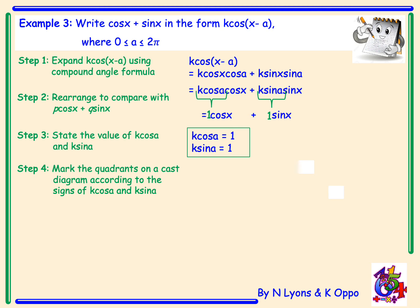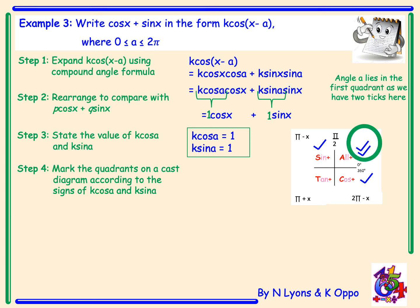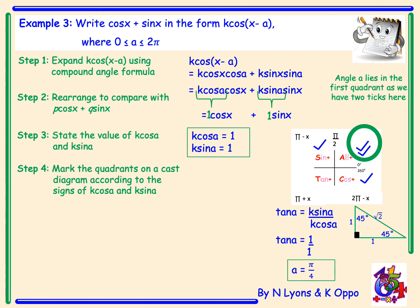Drawing our CAST diagram this time involving radians, we tick the quadrants where cos is positive — A and C — and where sin is positive — S and A. The angle a lies in the first quadrant. To find the angle we use tan a equals k sin a over k cos a, so tan a equals 1 over 1. This is an exact value — drawing the exact value triangle, the angle is 45 degrees, which in radians is pi over 4. So angle a is pi over 4.